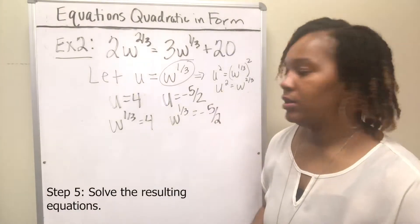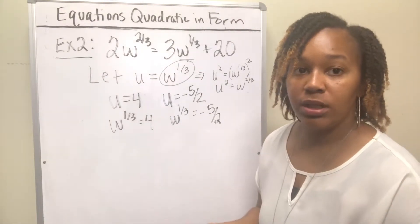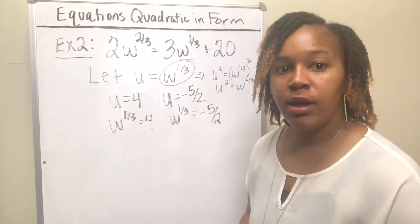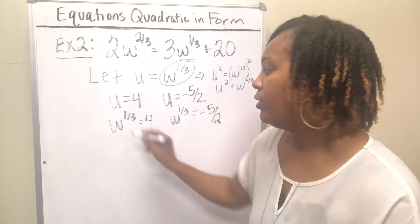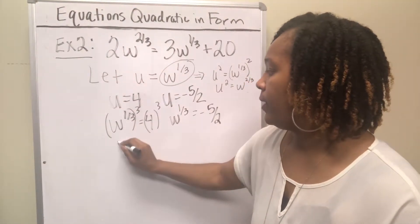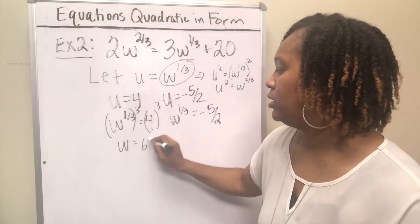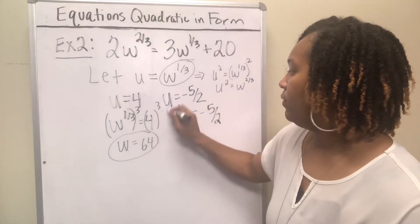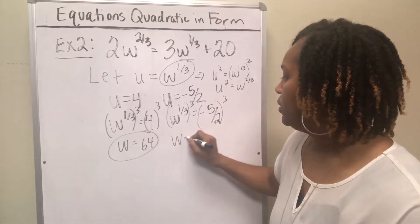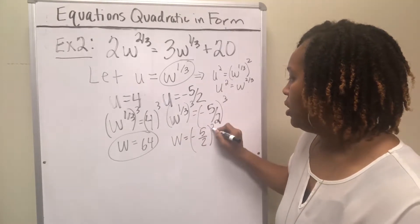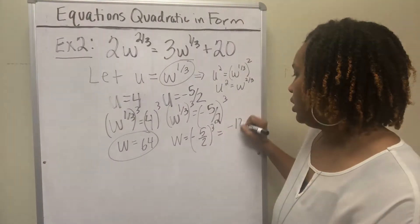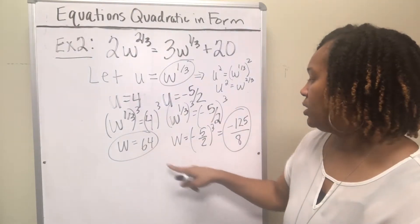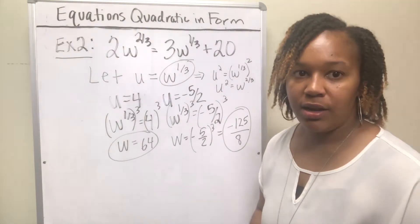Now I have equations with rational exponents — that means fractions — and in order to get rid of those, we raise both sides to the reciprocal. The reciprocal of 1/3 is 3, so raise both sides to the 3rd power. Here you get w = 4³ = 64 (that's 4 × 4 = 16, times another 4 = 64). Same thing for the other equation: raise both sides to the 3rd power. You get w = (−5/2)³ = −125/8. So you get two answers: w = 64 and w = −125/8.